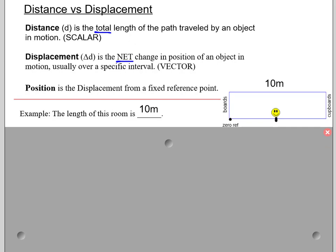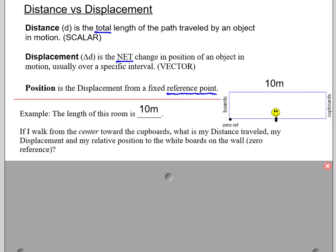And then lastly, position is the displacement from a fixed reference point. And what we'll start to see over time is that this reference point is very flexible. We can move that, change that. As the person solving, we get to do a lot of different things. So I'm going to say I'm in my room, and the length of the room is 10 meters.